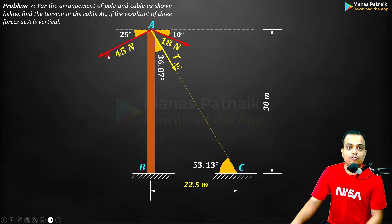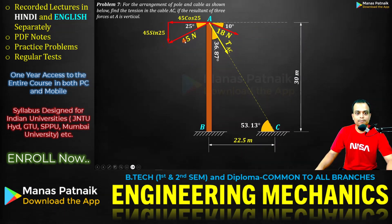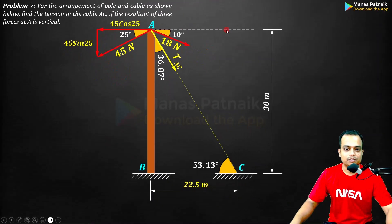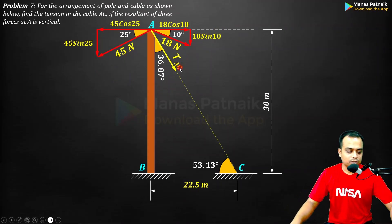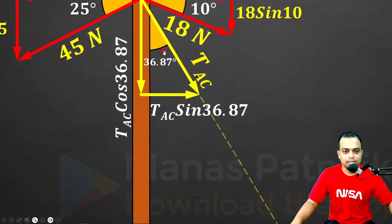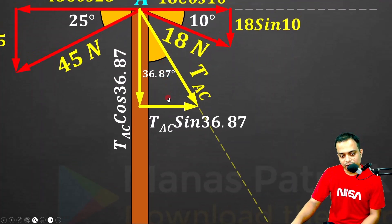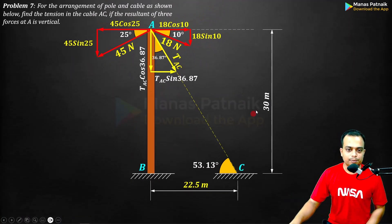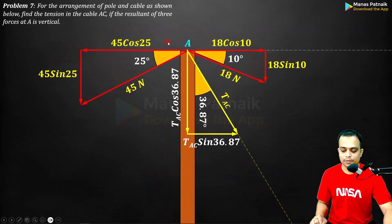The 45-newton force has two components: 45·cos(25°) and 45·sin(25°) — the component in front of 25 degrees is the sine component. Similarly, 18·cos(10°) and 18·sin(10°). For TAC, the angle with the vertical is 36.87°, so the component in front is TAC·sin(36.87°) and the other is TAC·cos(36.87°).